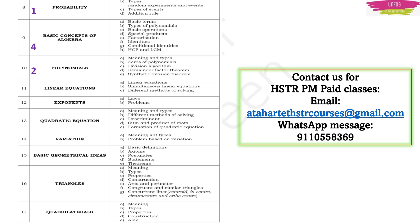I have placed those questions under Basic Concepts of Algebra as it is a very important chapter with foundational content. For Polynomials, two questions; Linear Equations, one question; Exponents — no question appeared but it is an important chapter; Quadratic Equations, two questions. Together, the entire algebra section — Basic Concepts of Algebra, Polynomials, Linear Equations, Exponents, and Quadratic Equations — gives you 10 marks. Variation had no question.